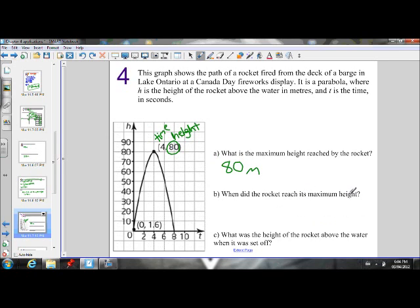When did the rocket reach its maximum height? So we see the word maximum. We know it's talking about the vertex again, and it's asking us when. When, that refers to time. So we can look at the x-coordinate, which in this case represents time. So at 4 seconds, it reaches its maximum height. After 4 seconds, the rocket is at its maximum height of 80 meters.